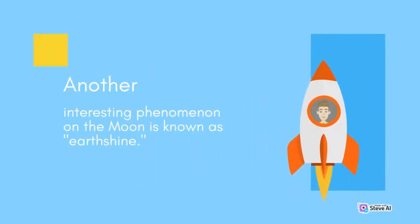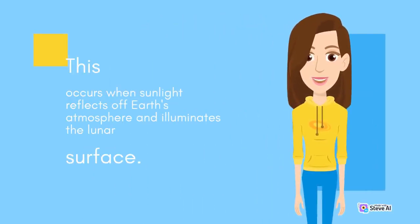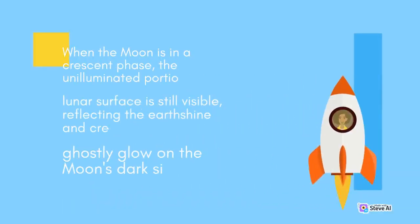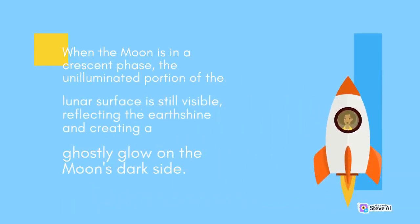Another interesting phenomenon on the Moon is known as Earthshine. This occurs when sunlight reflects off Earth's atmosphere and illuminates the lunar surface. When the Moon is in a crescent phase, the unilluminated portion of the lunar surface is still visible, reflecting the Earth's shine and creating a ghostly glow on the Moon's dark side.